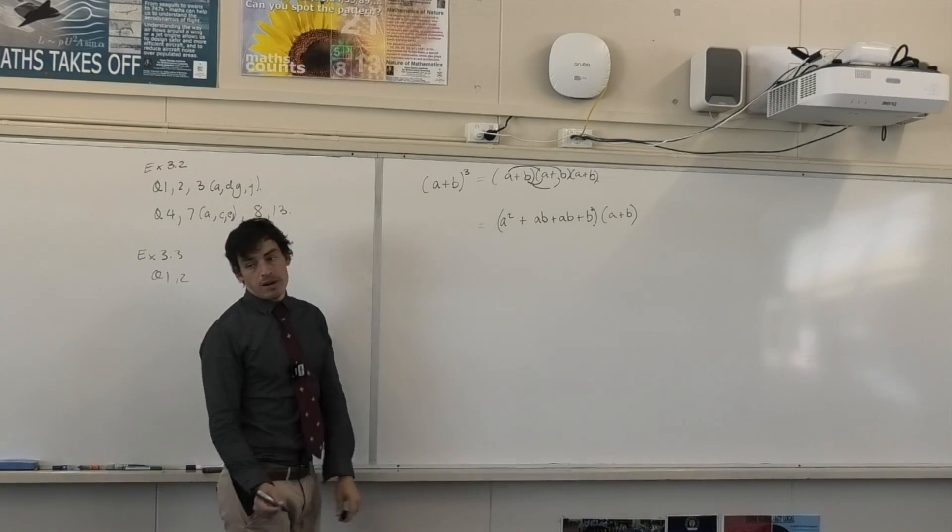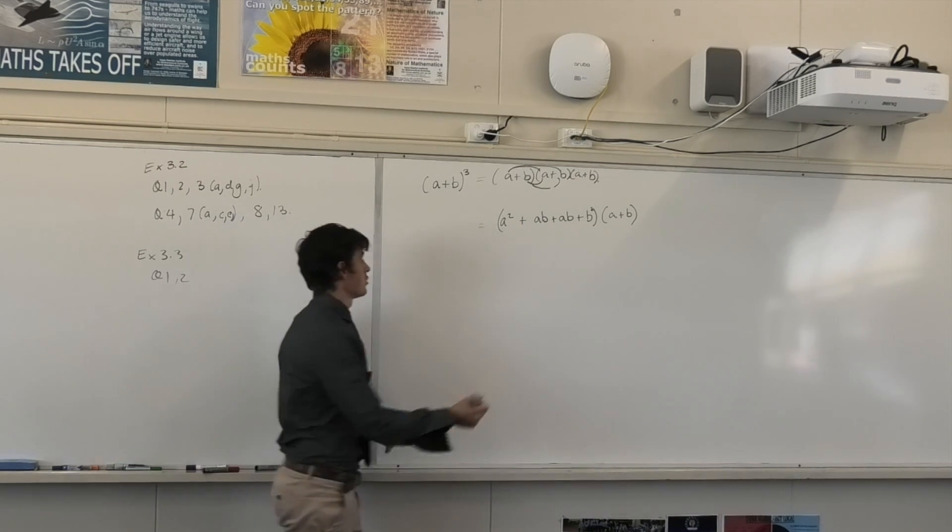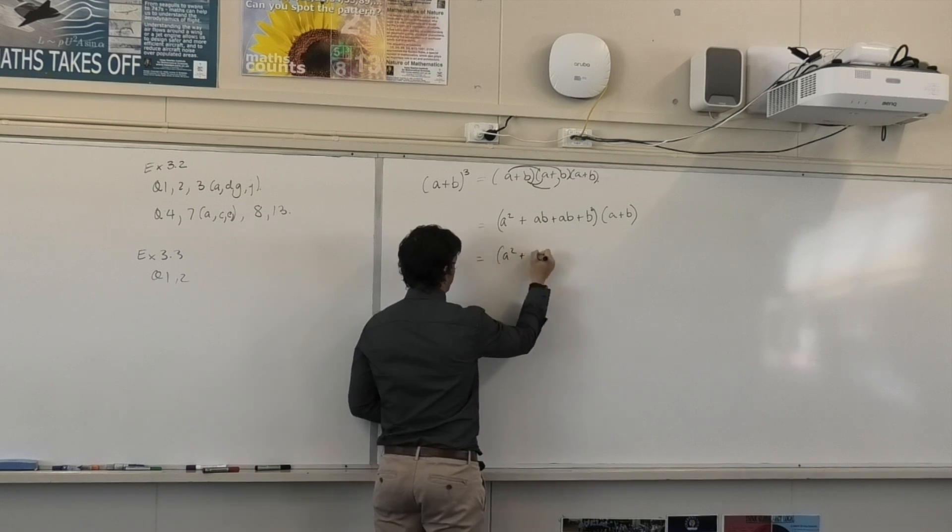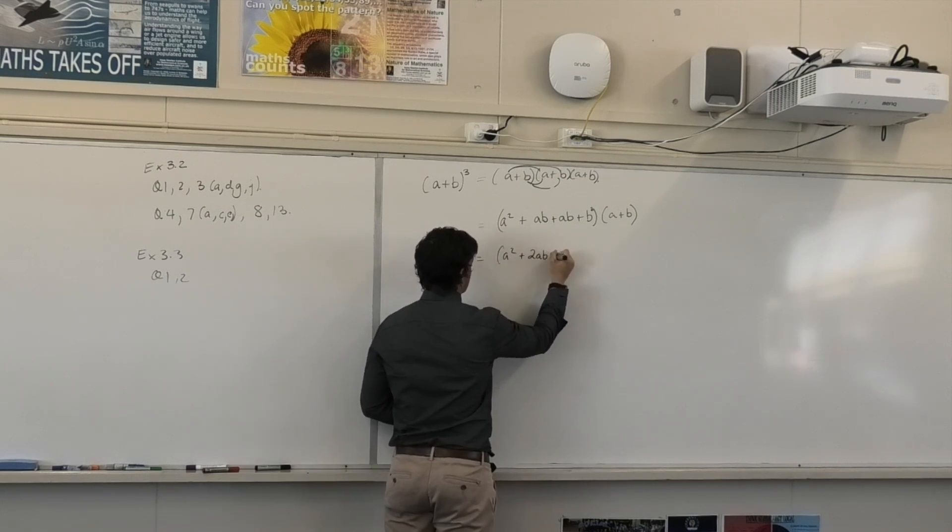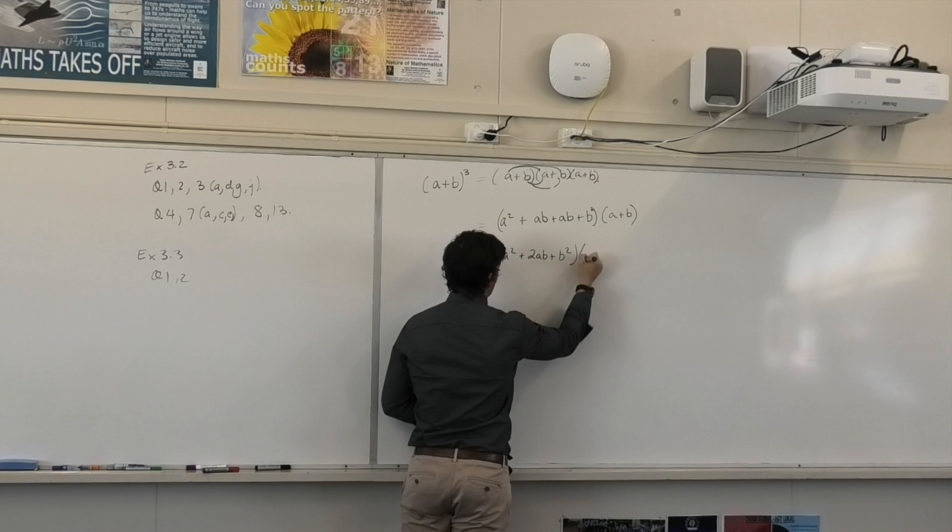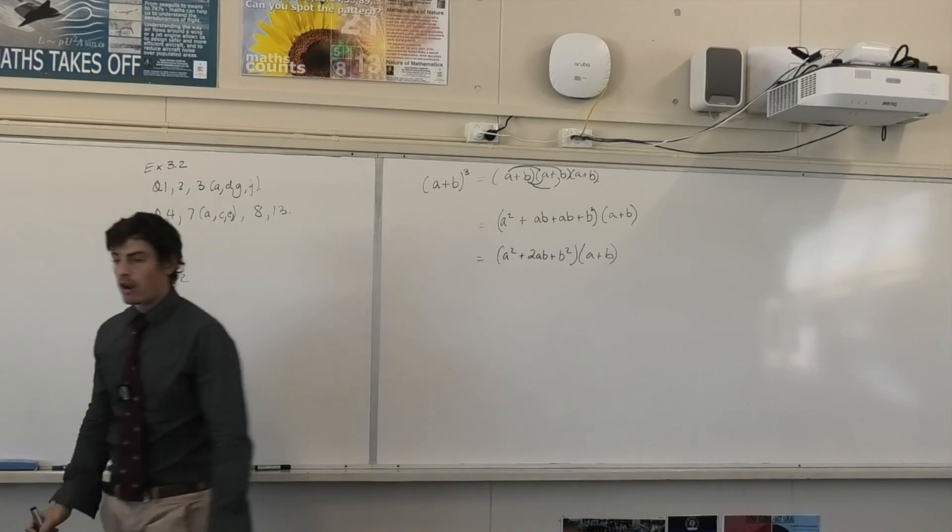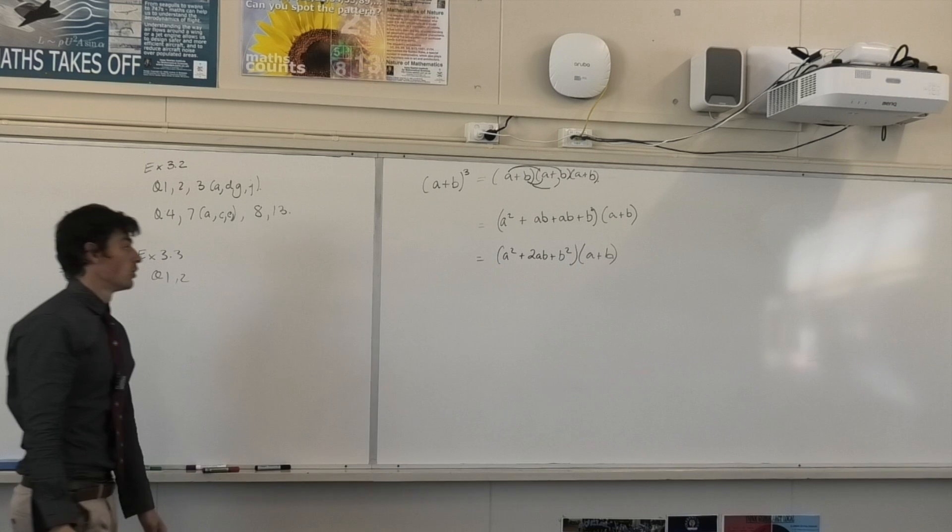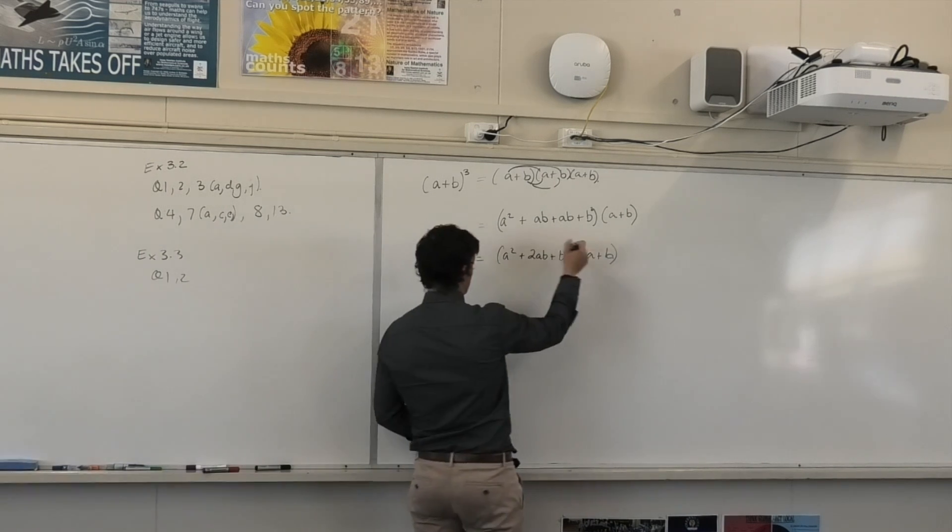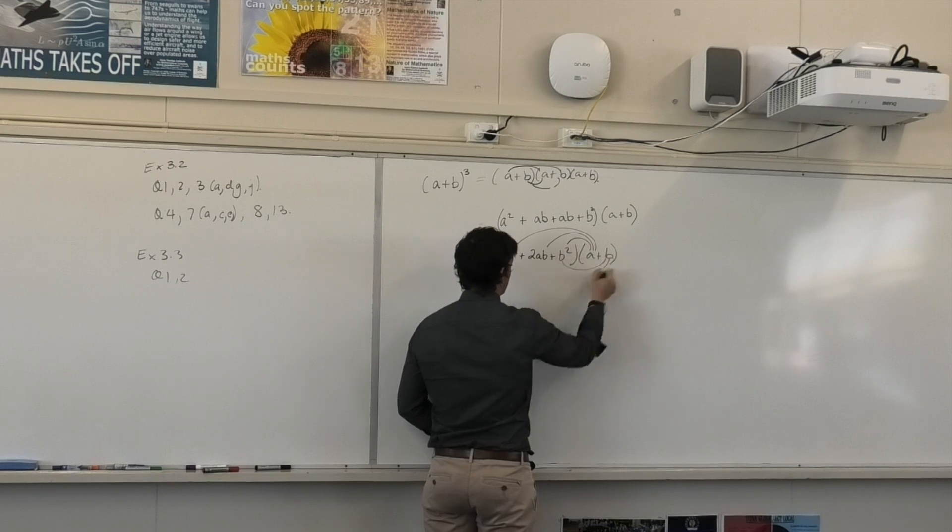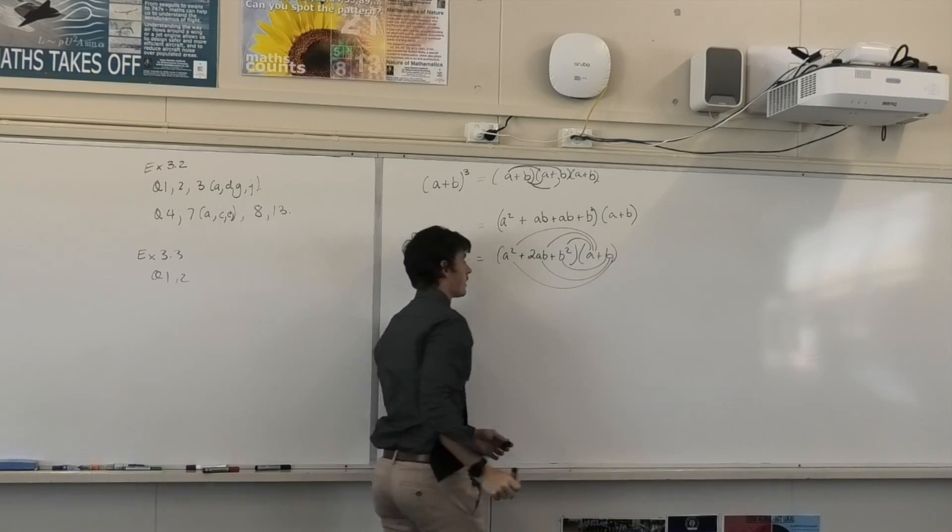Can I do anything with that first bracket? Yes, combining like terms. What does that become? A squared plus 2AB plus B squared times A plus B. And now I can use super crab claw or whatever you want to call it. Basically, I'm just going to distribute A into all three terms and then B into all three.